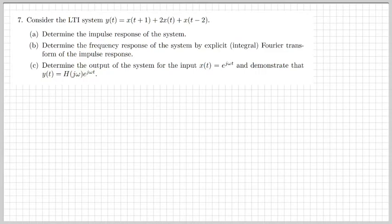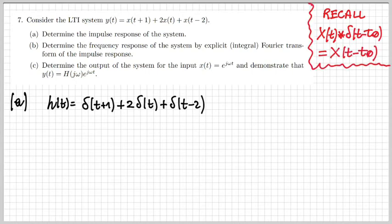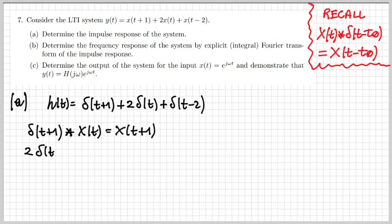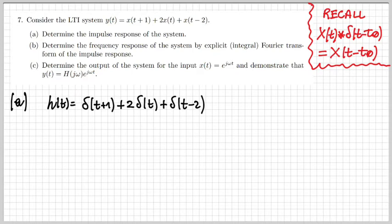The next exercise is about an LTI system where we're given the equation between the output y(t) and the input — shown at the top of this slide. We should determine the impulse response of the system. The impulse response is given by δ(t+1) + 2δ(t) + δ(t-2). This is because convolving a signal with δ(t - t₀) simply shifts it by t₀, giving x(t - t₀). So we get the three terms and the output y(t) readily follows.